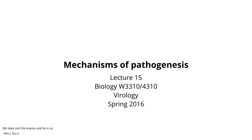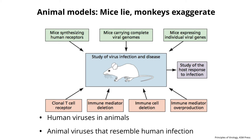Today we're going to take advantage of a lot that you've learned. We're going to talk about mechanisms of pathogenesis. Pathogenesis is the production of disease, so we're going to talk about how viruses make disease. In order to do this, we have to make observations in people and see what happens when they get infected — not so easy to do. We can't manipulate people readily; it's not ethical.